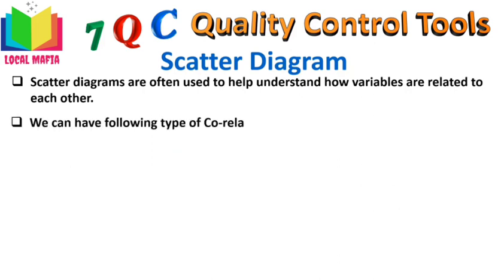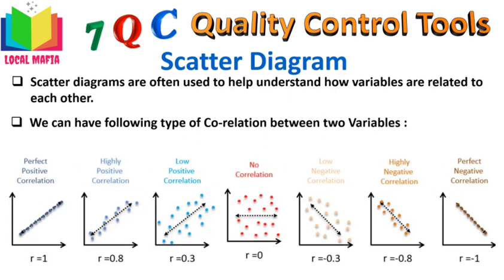The most common types of correlation between two variables are: perfect positive correlation (as X increases, Y also increases), high positive correlation, low positive correlation, and no correlation (where the two variables hardly affect each other). We can also have negative correlations — where if one variable increases, the other decreases — including low negative correlation, high negative correlation, and perfect negative correlation. This is how we determine whether and how there is a relationship between two variables.